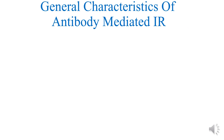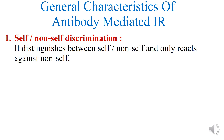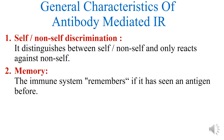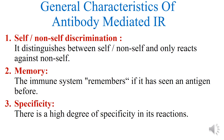The general characteristics of antibody-mediated immune response are categorized into three types. First is self and non-self discrimination, meaning the immune system is able to distinguish between self and non-self and only reacts against non-self. Second, it also has memory — it remembers if it has seen the antigen before. Third is specificity: there is a high degree of specificity in reactions mediated by antibodies, and a response to a particular antigen is specific for that antigen or group of similar antigens.